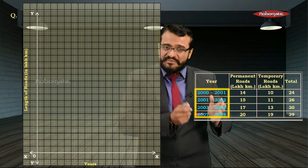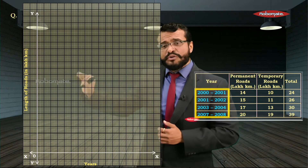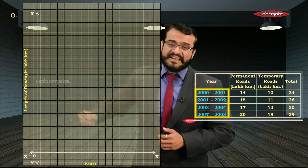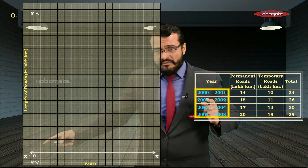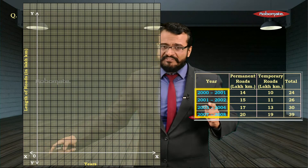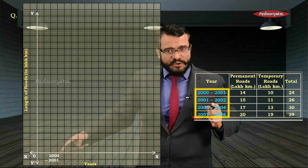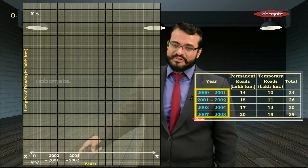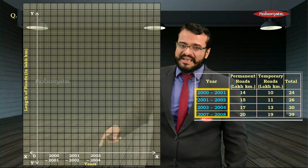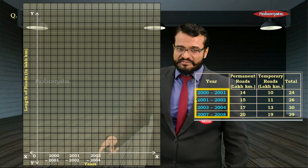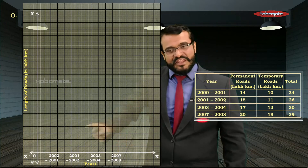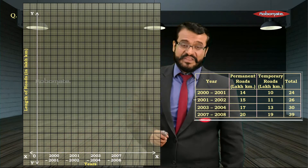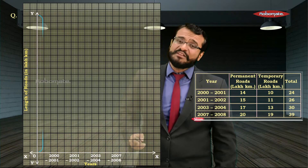We are not going to stick the bars on the y-axis. From the origin, leave two centimeters and write the first year 2000–2001. Then leave two centimeters and write 2001–2002, then 2003–2004, then 2007–2008. All four years are now placed on the x-axis.